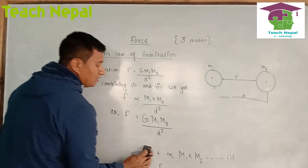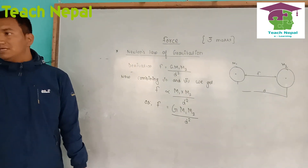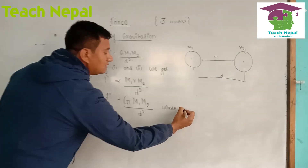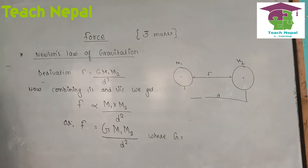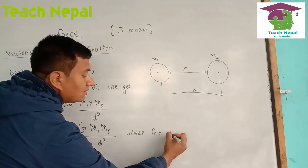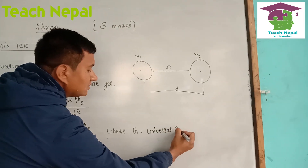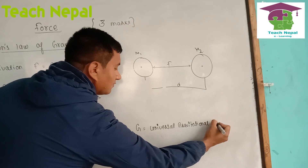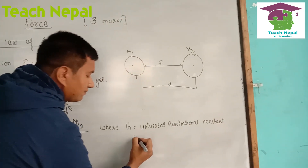When deriving the formula, if we get certain new quantities, we have to define these quantities. G is called the Universal Gravitational Constant. So G is the Universal Gravitational Constant.